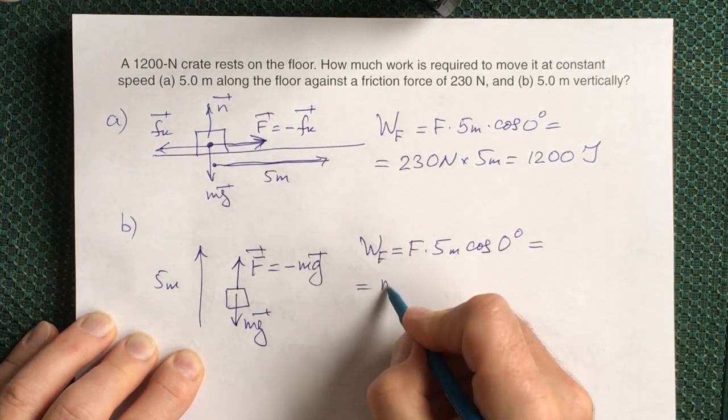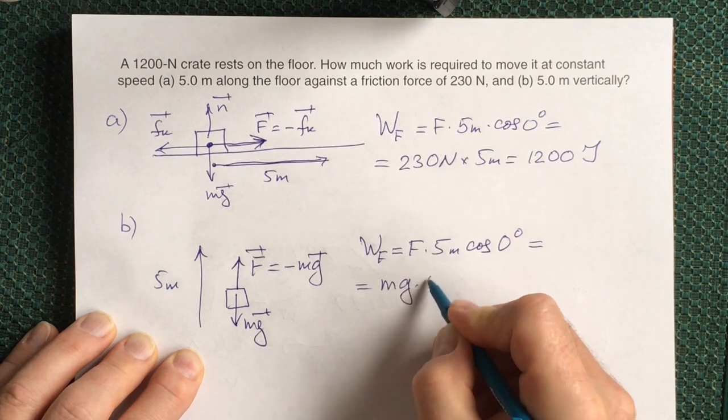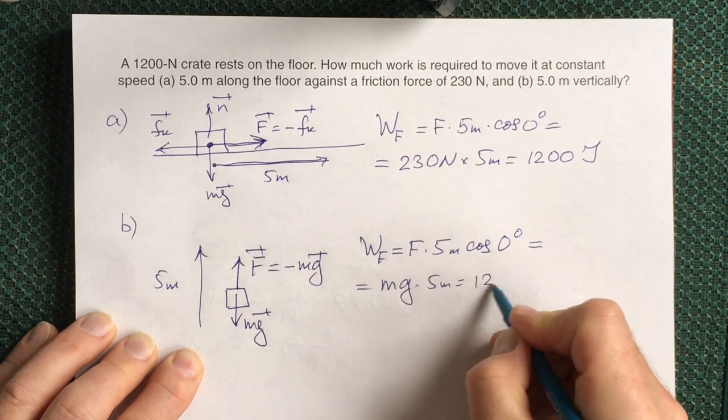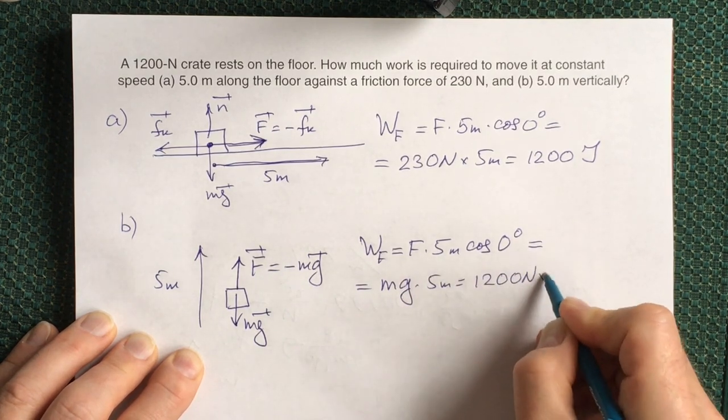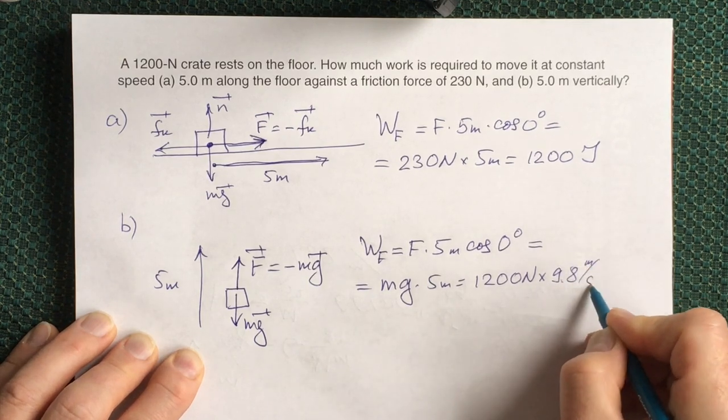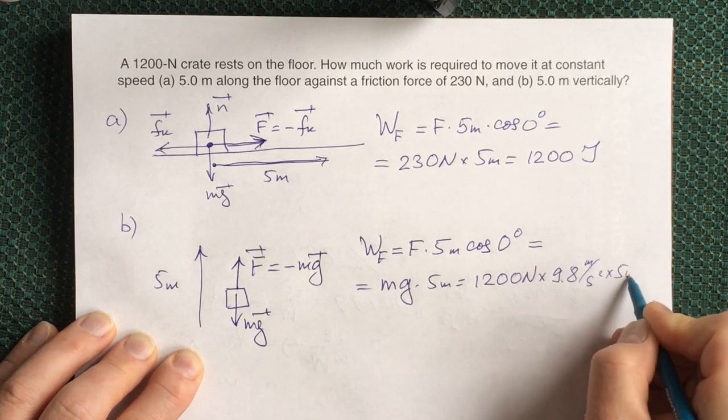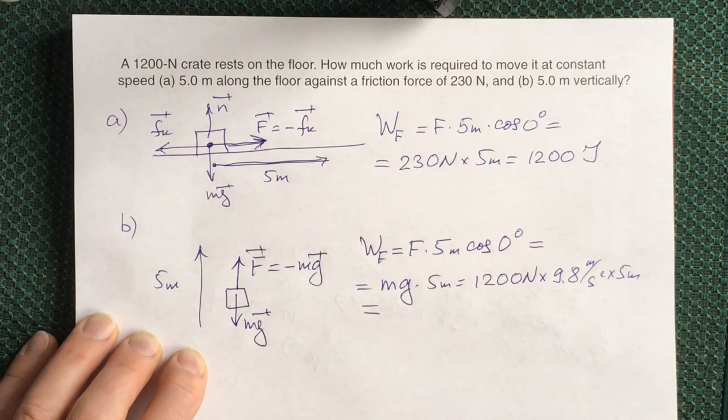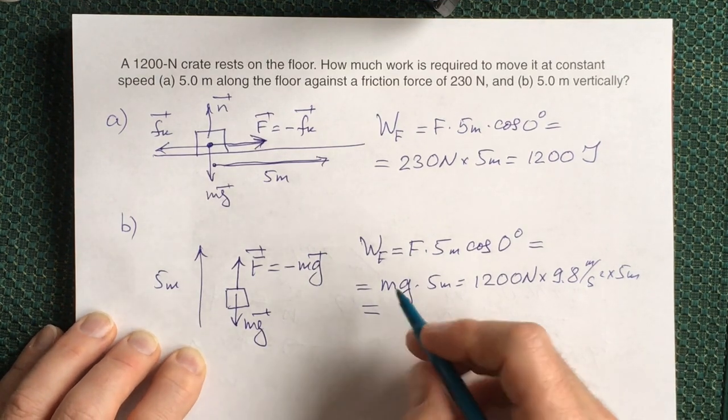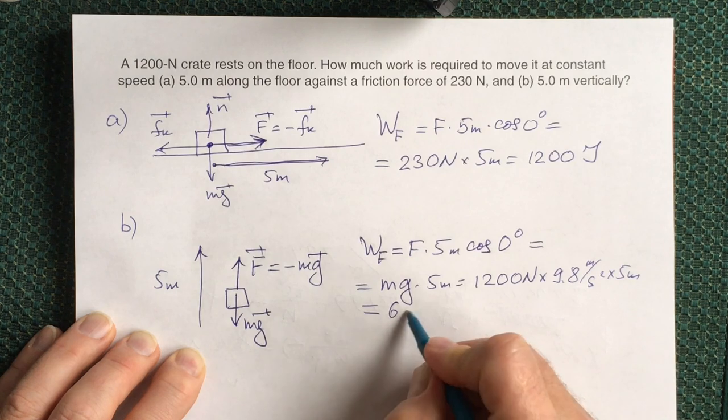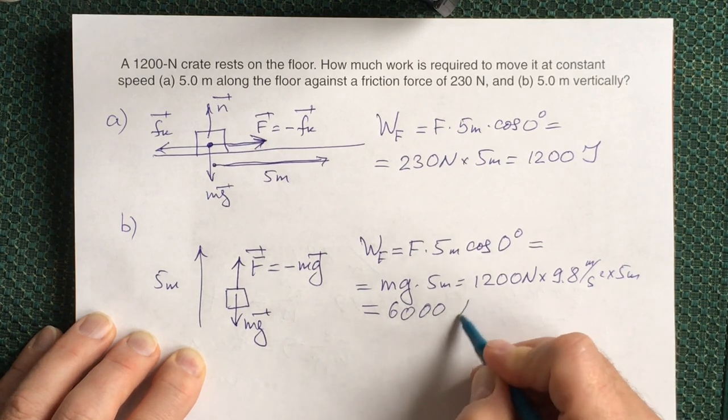So now we have force mg times 5 meters, or 1200 newtons times gravity acceleration 9.8 meters per second squared times 5 meters. If you multiply all of these quantities you will have roughly 6000 joules.